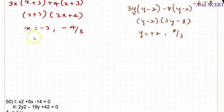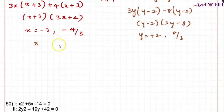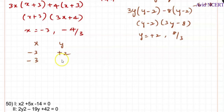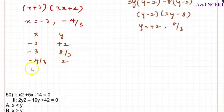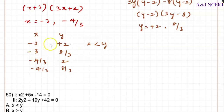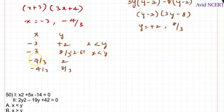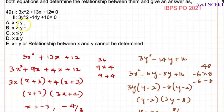Now comparing x and y values: x = −3 and x = −4/3, while y = +2 and y = 8/3. Comparing −3 with +2: x < y. Comparing −3 with 8/3 (≈2.67): x < y. Comparing −4/3 with +2: x < y. Comparing −4/3 with 8/3: x < y. In all cases, x is less than y.